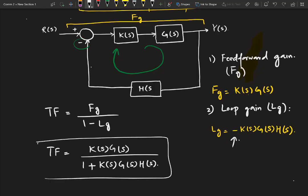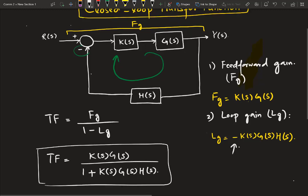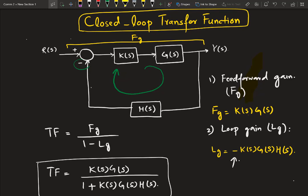That is the generic form of the transfer function. So, in this easy and generic way, you can compute the transfer function of any closed-loop system. The only thing that you need to know is the feedforward and loop gain and that is simply the product of the respective transfer functions in each path.